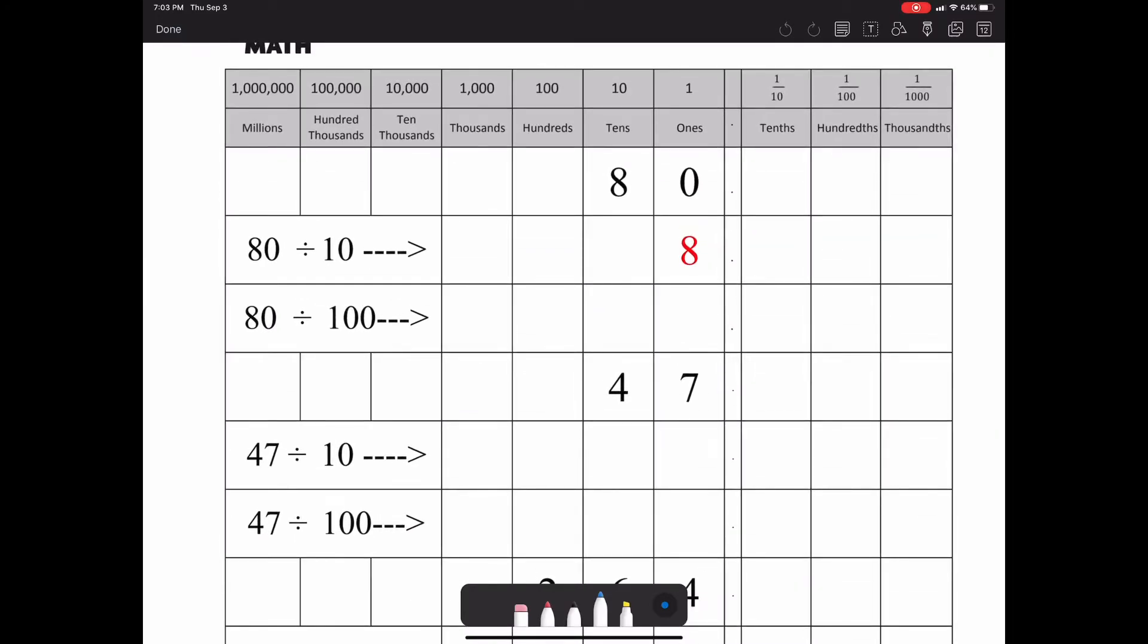Here we have 80, and we're going to divide by 10. I went ahead and showed you that we're going to do 80 divided by 10 on this line and then 80 divided by 100 on the next row.